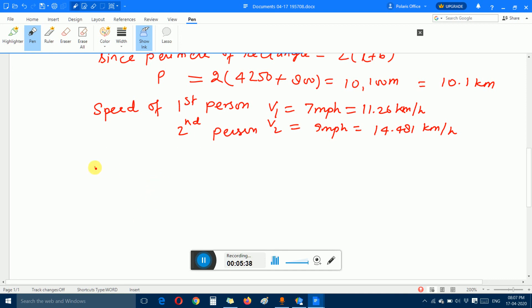Since for the rectangle, this side is 4,250 meters and this is 800 meters. Suppose they meet at this point. Then they have to travel this distance. At time T they will meet.